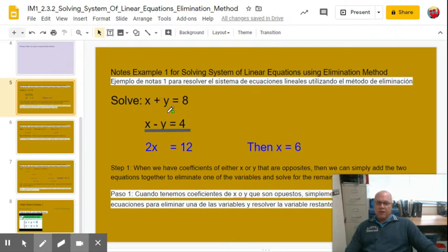So now let's look at our system here. What are the coefficients? Coefficients is a fancy word for the number that's in front of the variable. So the coefficient of x here is 1. The coefficient of the x on the bottom is also 1. Those are not opposites. They're the same value. Okay. So when you add those, you will not get 0.